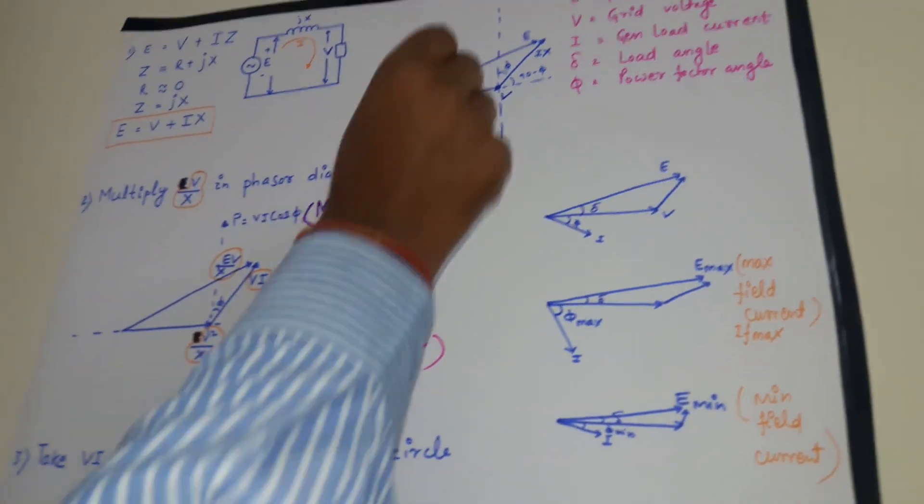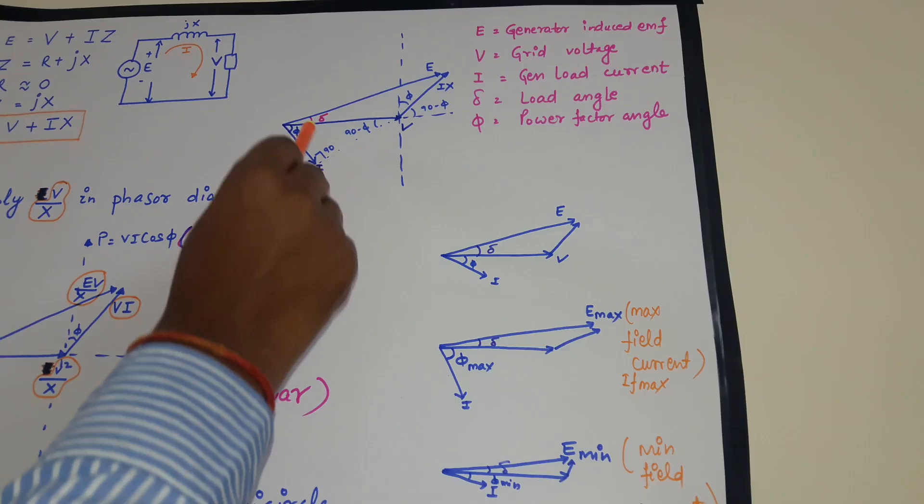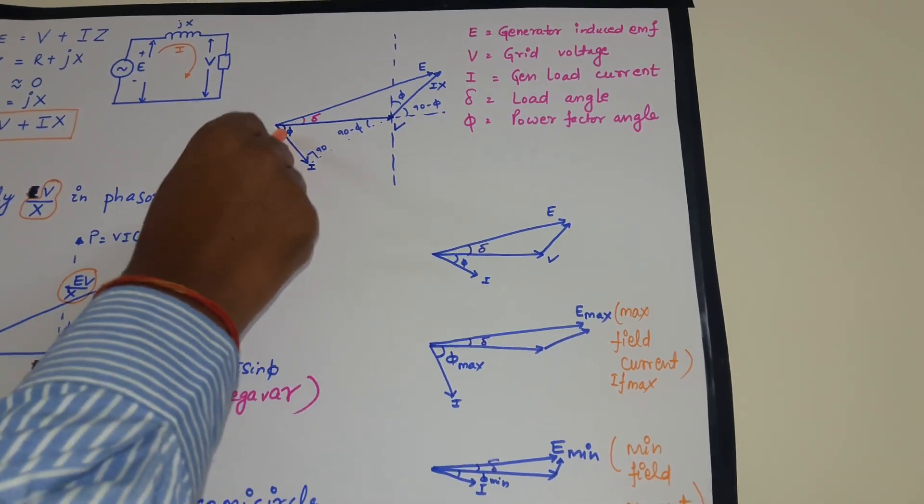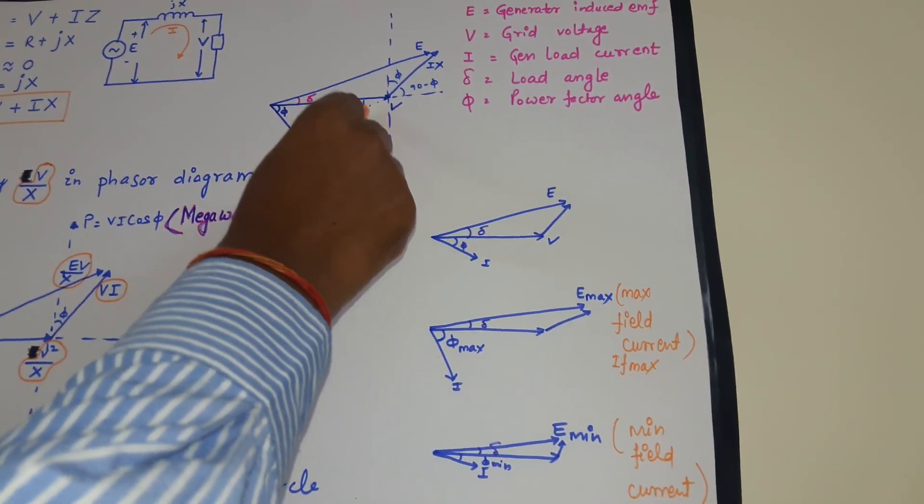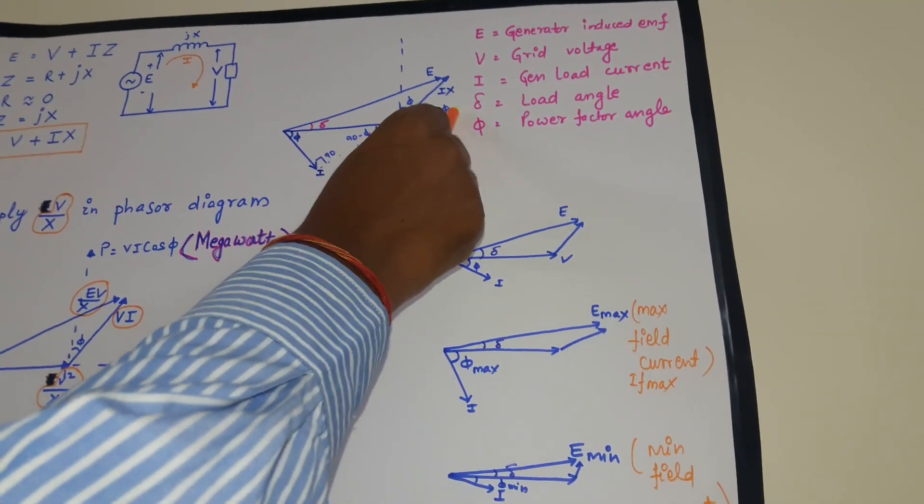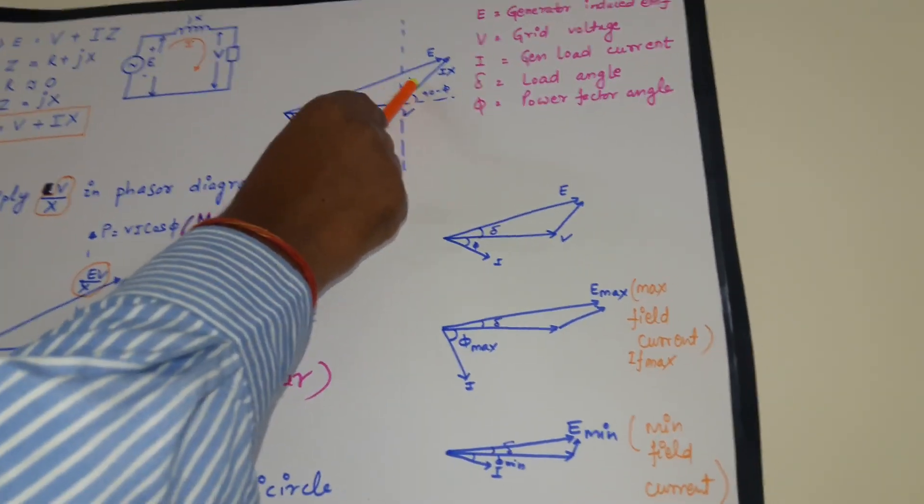Now just focus on this diagram. Let's extend this line. This is 90 degree. This is phi. So this will be 90 minus phi. The angle which is vertically opposite to this is 90 minus phi. So this angle is coming out to be phi.